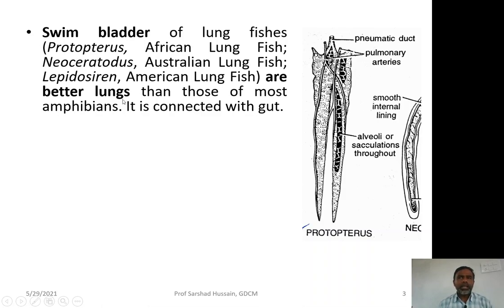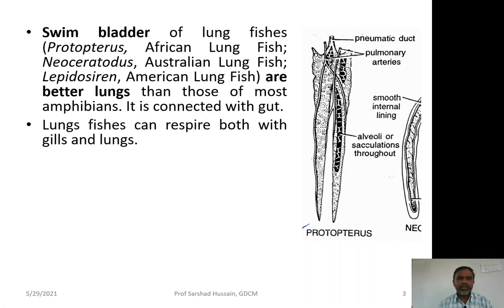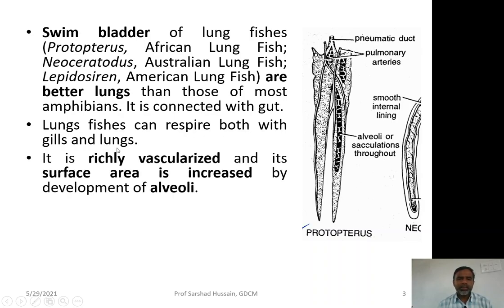Once lungs started developing from the amphibians onwards, in amphibians the lungs were not so well developed. However, it is supposed that the swim bladder of the lungfish species is a much better lung than that of the amphibian lungs. These swim bladders remain connected with the gut, and lungfish basically respire through both gills and these air bladders which act as lungs.